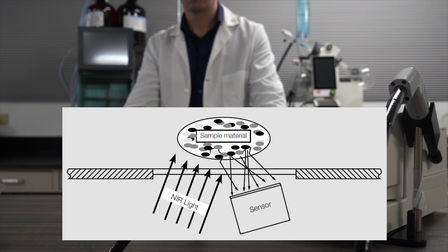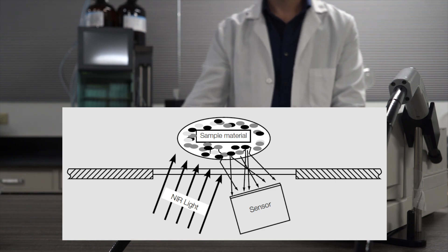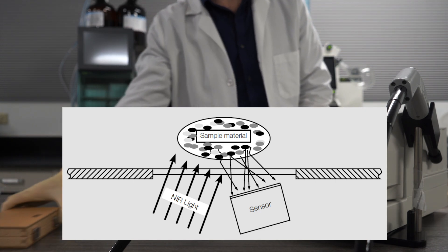And also, like the solids module, you can add a transflectance adapter to measure liquids with a range of path lengths including 0.5, 1, or 1.5 millimeters.